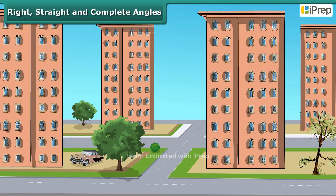Straight and Complete Angles. There are four pockets A, B, C and D in a residential locality. The four pockets are located like this.